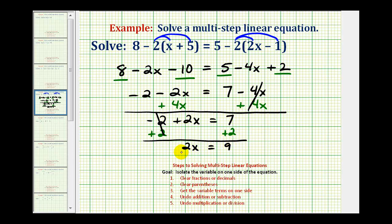Last step here is to divide by positive two on both sides of the equation. Notice here, two divided by two is equal to one, one times x is just x, so we have x equals nine halves.